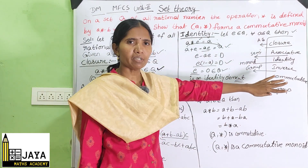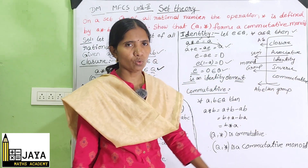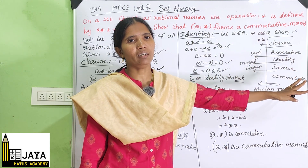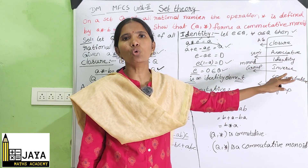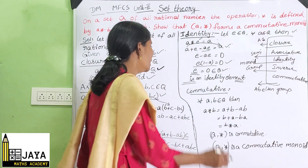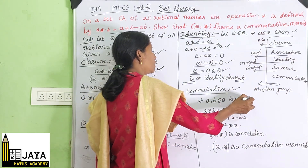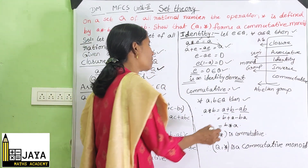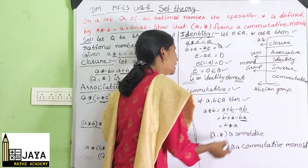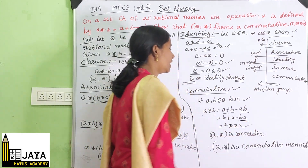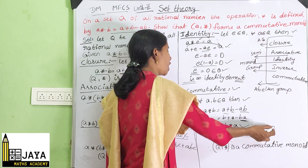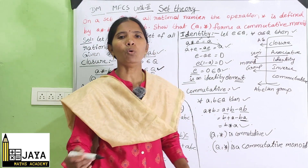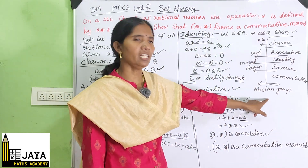Closure, associative, and identity are completed. Inverse is not needed here because we were not asked to show a group — only a commutative monoid. For the commutative property: for all A, B ∈ Q, A★B = A + B − AB = B + A − BA = B★A. Therefore (Q, ★) is commutative.